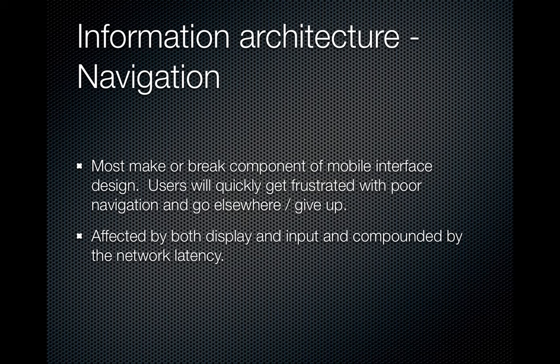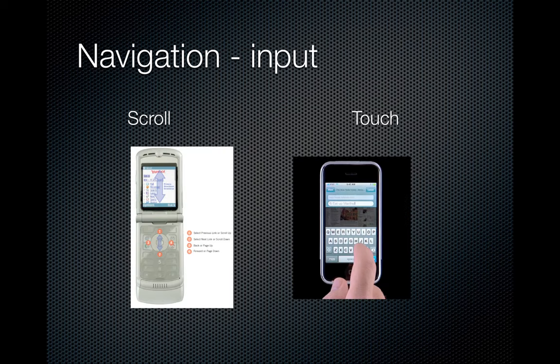Let's talk about information architecture, specifically navigation. Navigation is something quite often overlooked but really important, and especially important in the mobile context, because users will quickly get frustrated with poor navigation — navigating on a small mobile device is more difficult than on a desktop. This is affected by both the display and the input, compounded by network latency. For your assignment, you can deal with the touch realm, but it's good to keep in mind that navigation is different across different classes of mobile devices.